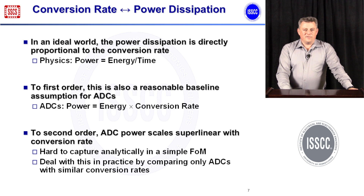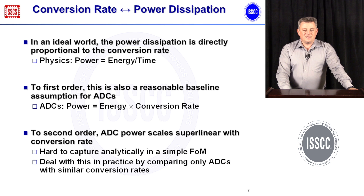Let's start with conversion rate and power dissipation. Basic physics tells us that power is energy invested per unit of time. In A-to-D converter terms, this means power equals energy times the conversion rate, and this is indeed the proportionality factored into the standard figures of merit used today.